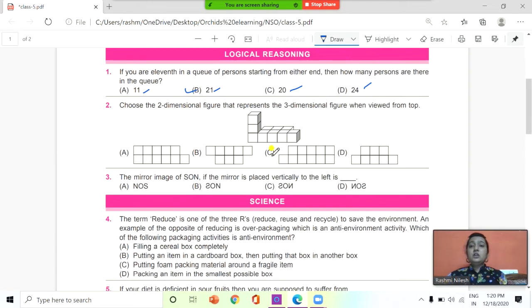Next, choose the two-dimensional figure that represents the three-dimensional figure when viewed from top. You need to choose a figure which is two-dimensional but that represent a three-dimensional figure when you view it from the top side. Look at the figure here: this is option A, B, C, and D. So when you look it from the top it should look like this, a three-dimensional one.